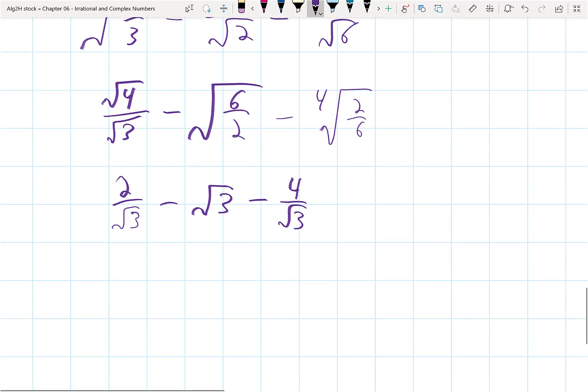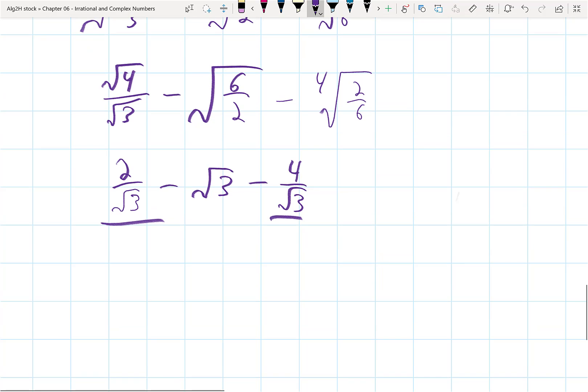Which, before I do anything with that, I can notice that those are, in fact, like terms. So, if I get 2 over root 3 minus 4 over root 3, that gives me negative 2 over root 3, and I still have this minus root 3 here.